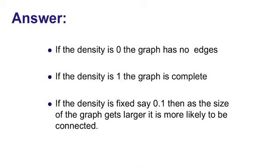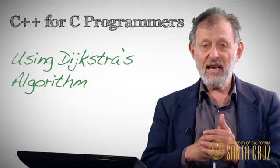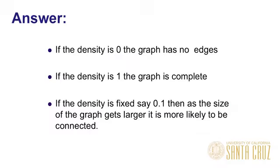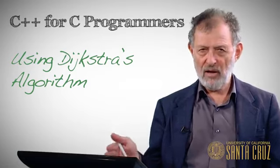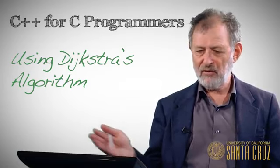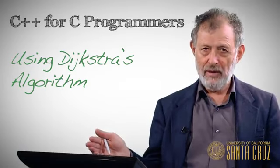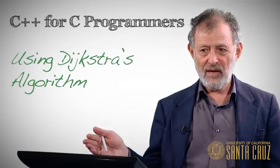And now if the density is 0.1 and we have a size that grows, so let's say we have 5 nodes, density is 0.1. That means 1 tenth of the time in a 5 node graph, we're going to stick an edge. Well, that's not going to happen often. 5 nodes, that means roughly speaking, we're going to throw in an edge 50% of the time for that particular node. Well, that's not going to be connected. So it's very unlikely.